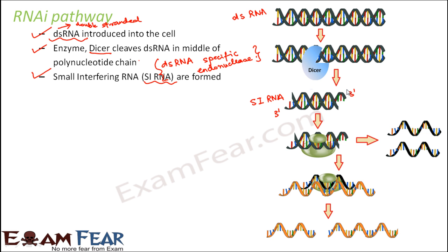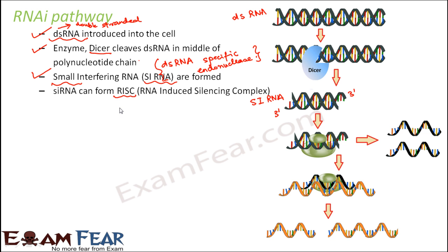These are known as small interfering RNAs — small because they are extremely short, and interfering because these RNAs are actually going to interfere with the messenger RNA and are responsible for causing silencing of mRNA. The next step is that this siRNA can form RISC — RNA-Induced Silencing Complex — which is formed when siRNA combines with other protein structures.